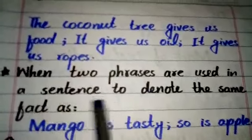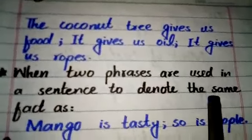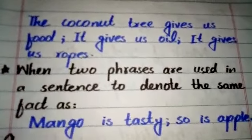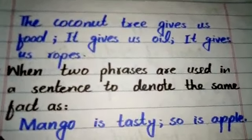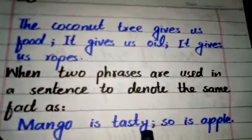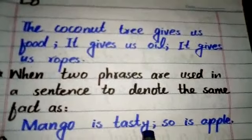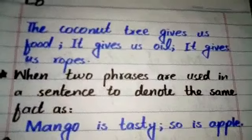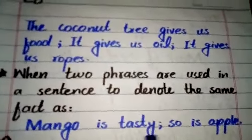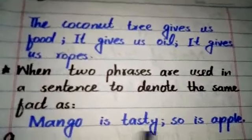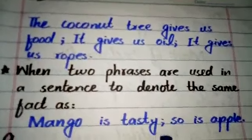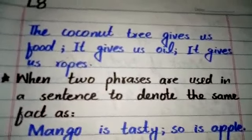The semicolon is also used when two phrases in a sentence denote the same quality. For example: 'Mango is tasty; so is apple.' Both share the quality of being tasty, so they can be linked using a semicolon.